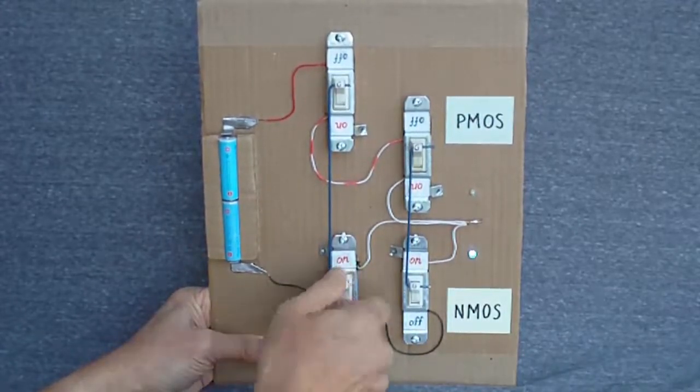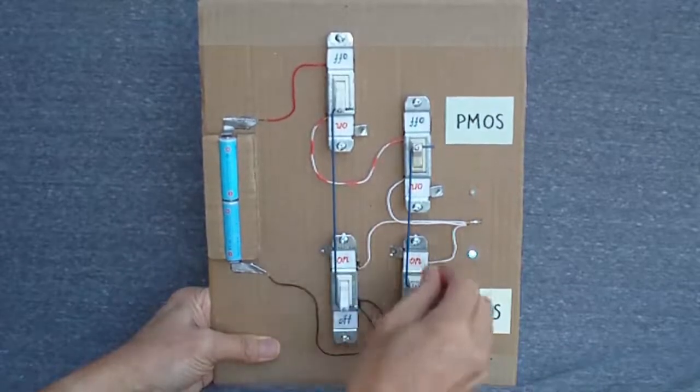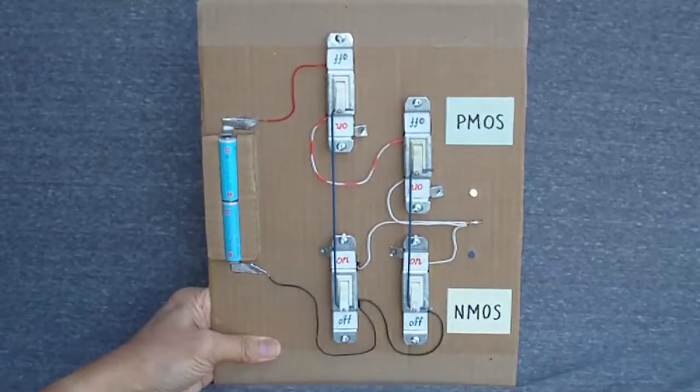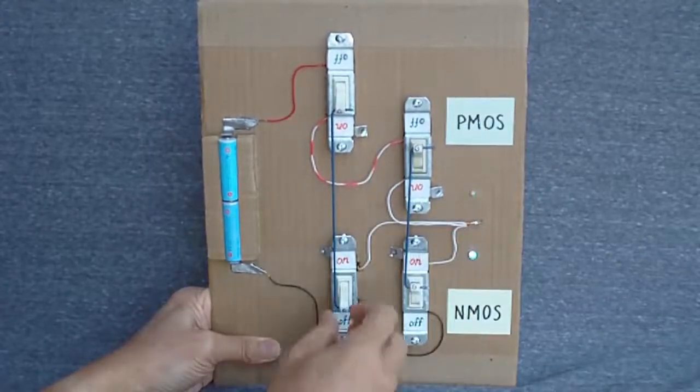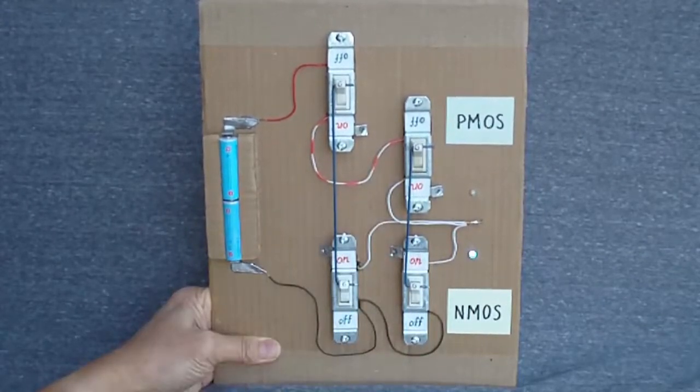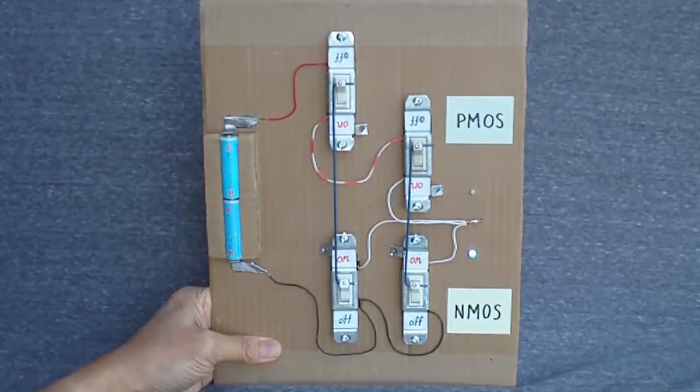So if you play with this for a while, you see that the output is high only when both inputs are low, and always low otherwise. This is a logical NOR function. Also, the output never floats, and there's never a short circuit path between power and ground.